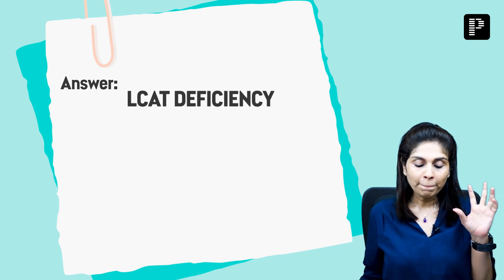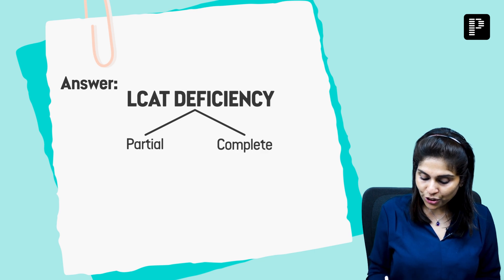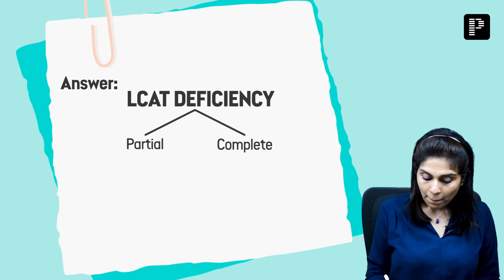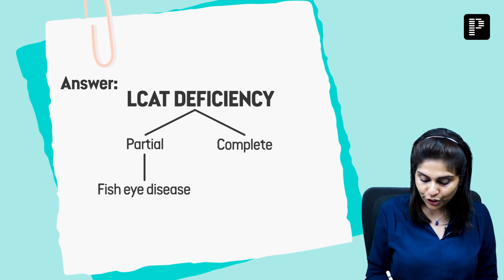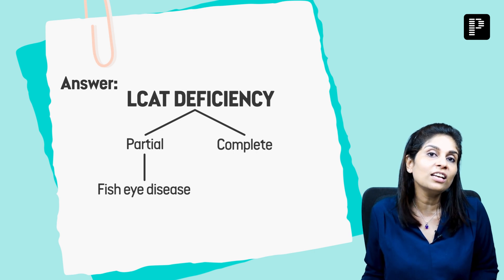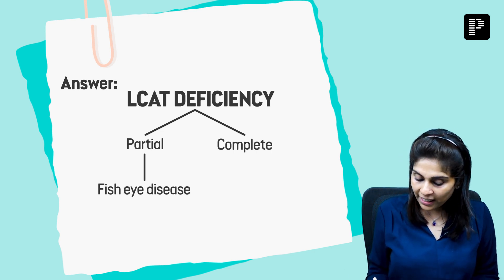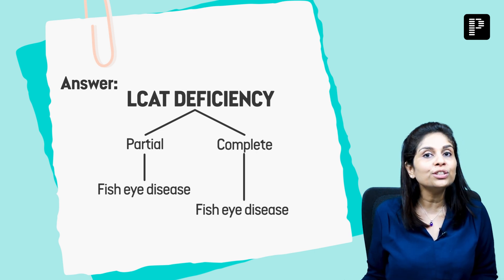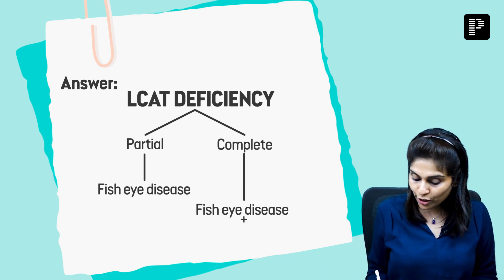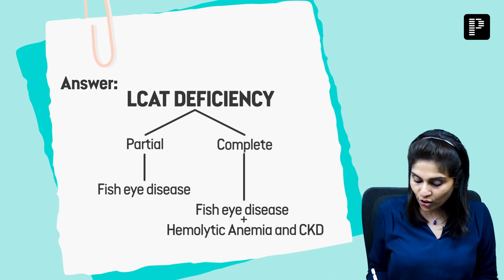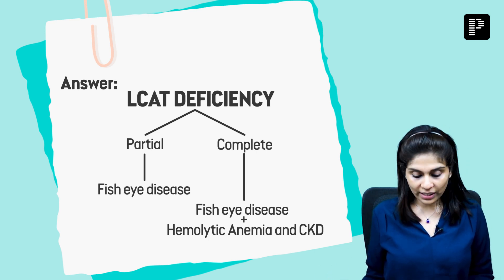The take-home message: LCAT deficiency can present as partial or complete LCAT deficiency. Partial LCAT deficiency presents as fish eye disease with corneal opacity. Complete LCAT deficiency also presents as fish eye disease, but additionally you see hemolytic anemia and chronic kidney disease.